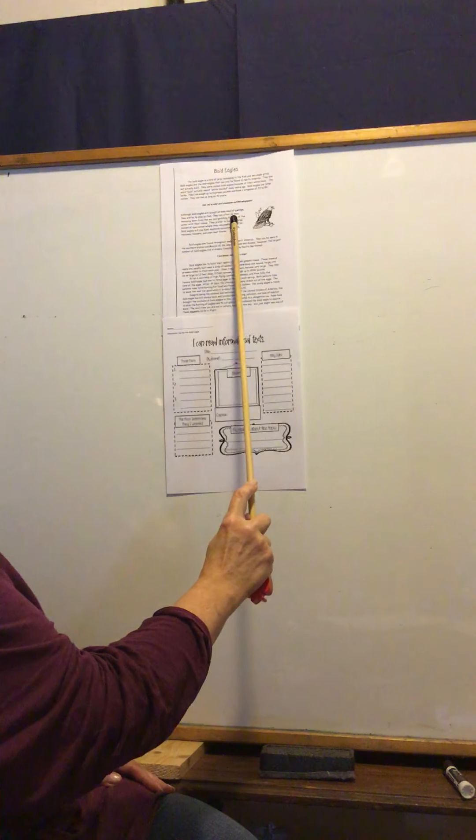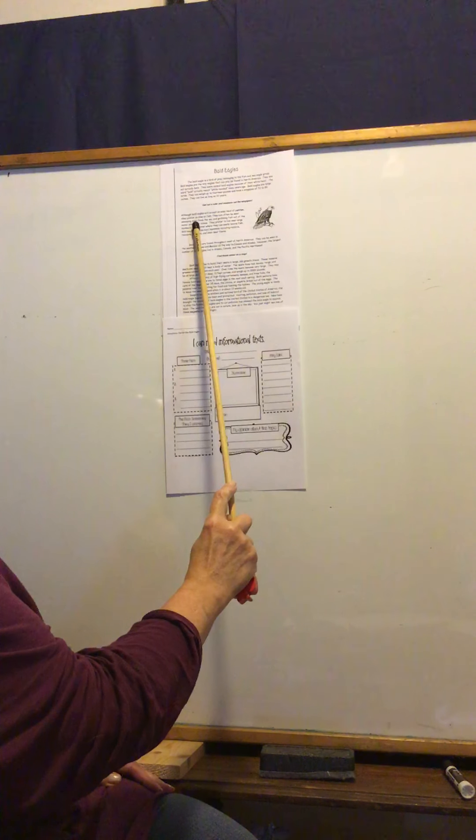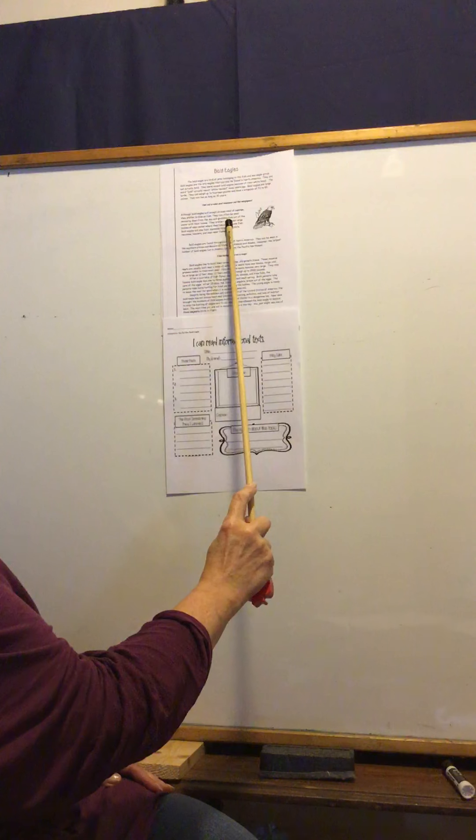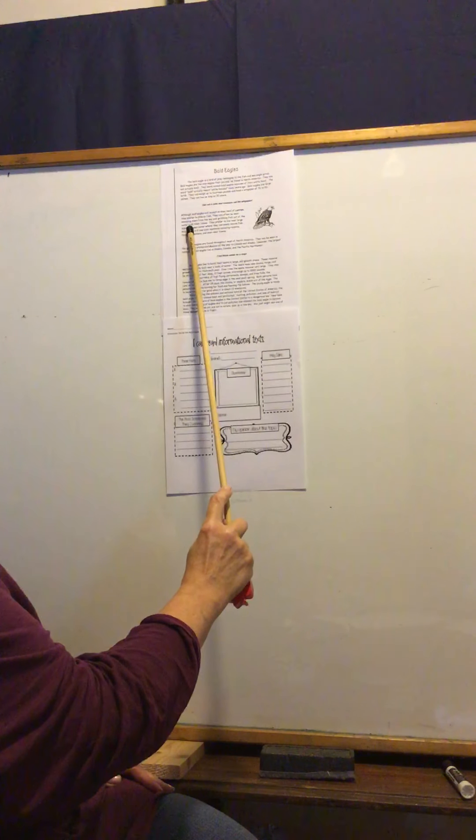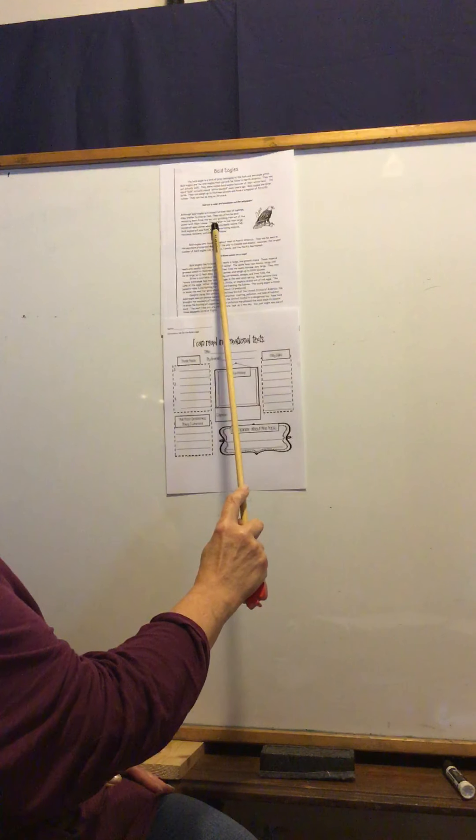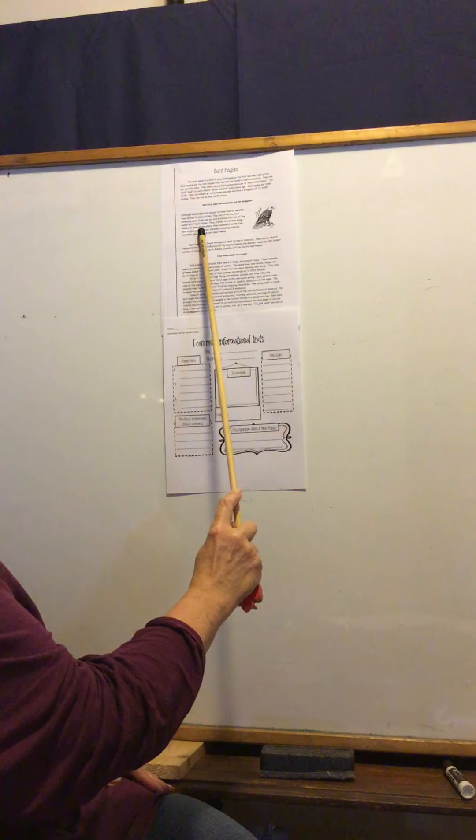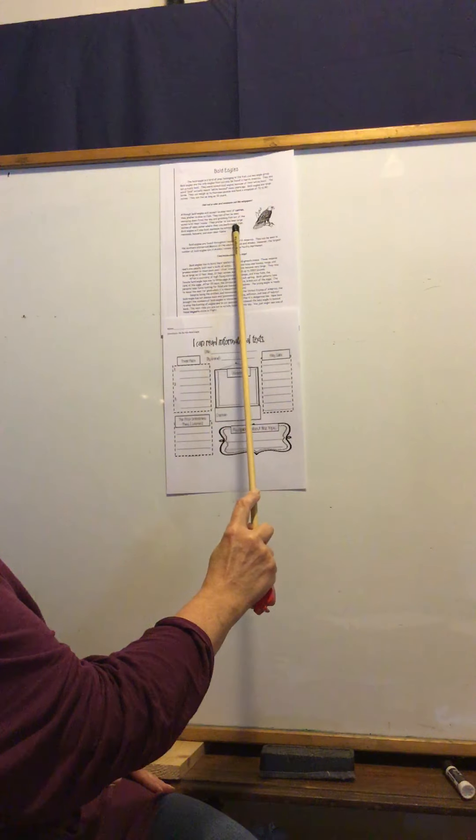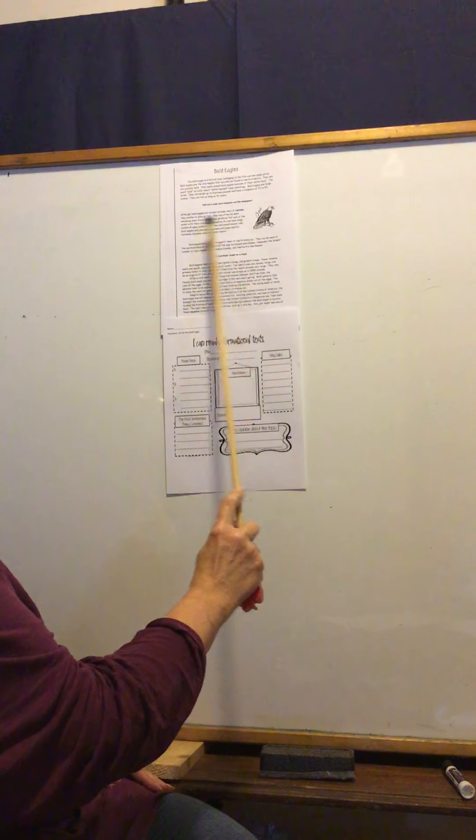They can often be seen swooping down, going down from the sky and grabbing fish out of the water with their talons, their claws. They prefer to live near large bodies of open water where they can easily locate, find fish.